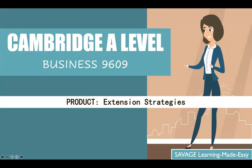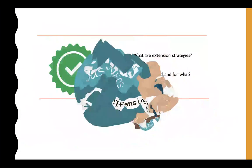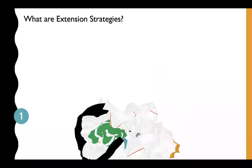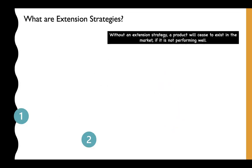Hi everyone, I hope you're doing well. Let's move on — still in product, but this is the final bit on product in the marketing mix. We're going to talk about extension strategies: when they are used and for what. Extension strategies are basically used when the product is in the product life cycle stage between maturity and decline. An extension strategy is used so that the product can stay longer in the market — basically extending its life.